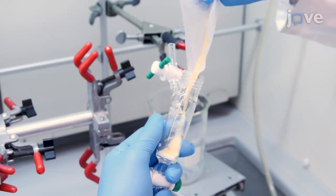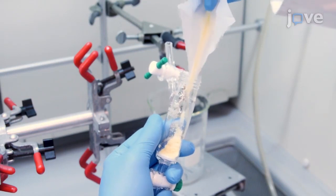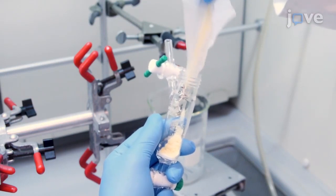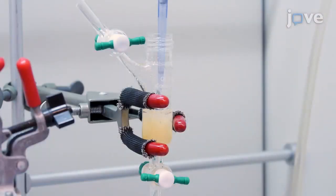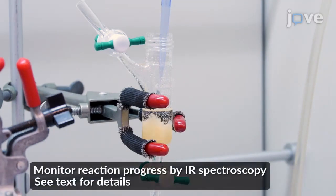To begin the synthesis, add to a 25 milliliter solid-phase reaction vessel 1 gram of REM resin, 20 milliliters of dimethylformamide, and 2.4 milliliters of furfurylamine.